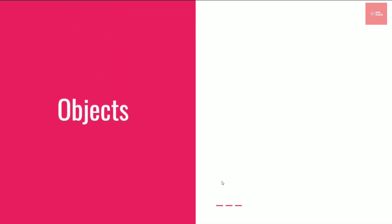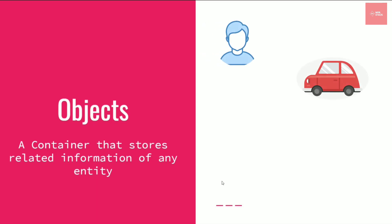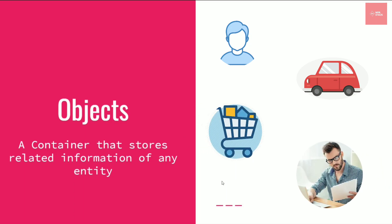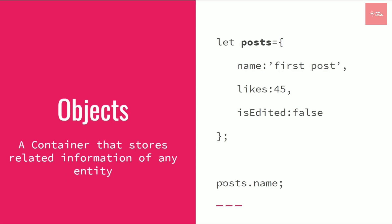Let's look into the first reference data type, called objects. An object is nothing but a container in which you store all the related information of an entity. By entity, I mean any kind of real-world object — a person, vehicle, orders, employees, organization, department, and so on. Any real-world entity is known as an object, and we store various related properties together in one container.